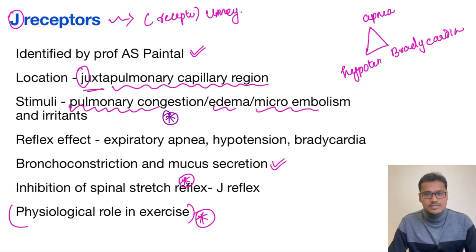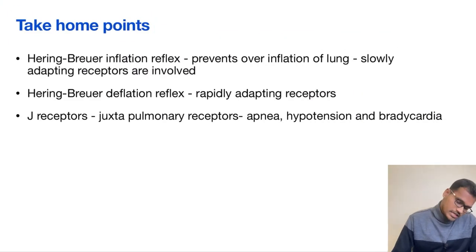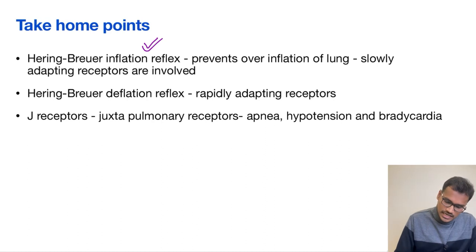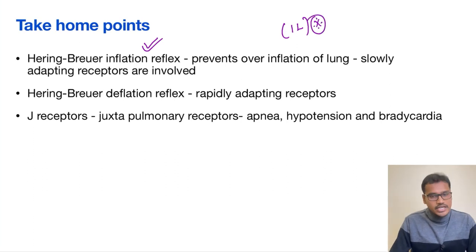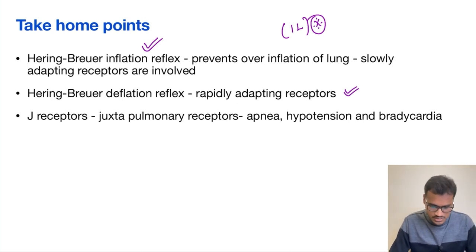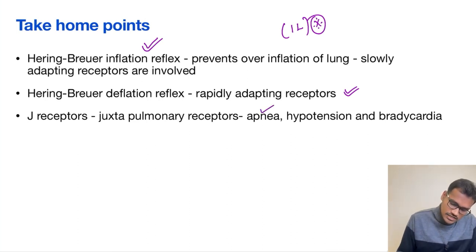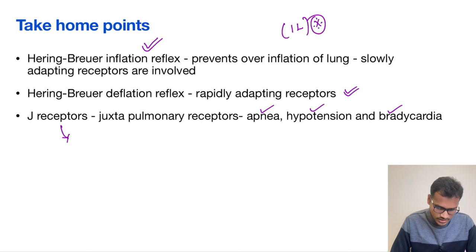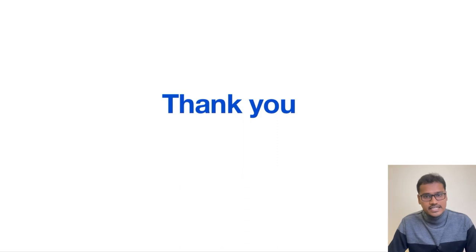The take-home points: the Hering-Breuer inflation reflex prevents over-inflation and activates at around 1 liter tidal volume. The Hering-Breuer deflation reflex involves rapidly adapting receptors, also called cough receptors. The J receptors, also called juxtapulmonary receptors, when activated cause the classical triad of apnea, hypotension, and bradycardia, and are responsible for the J reflex. Thank you for listening.